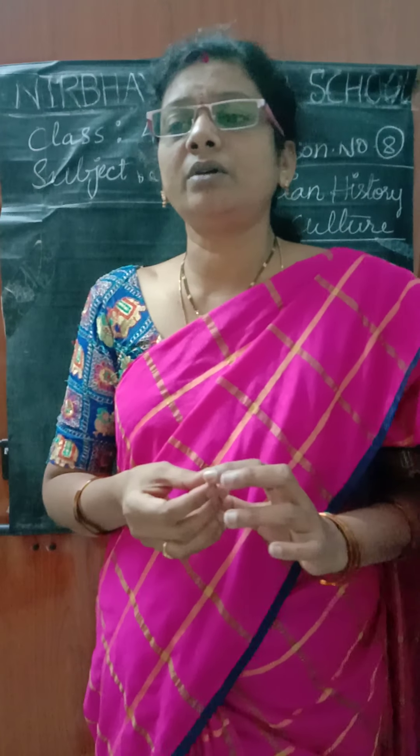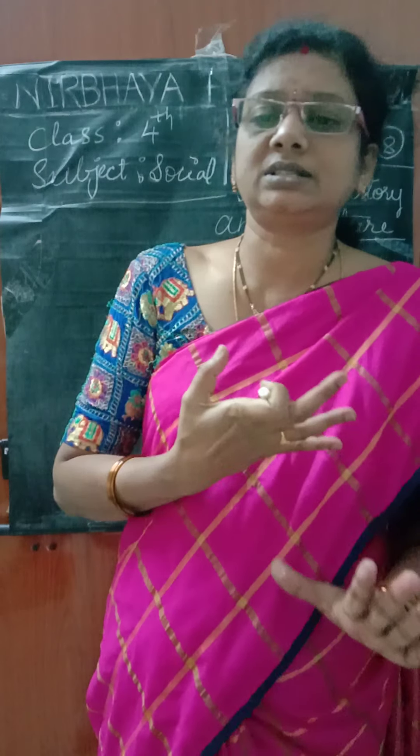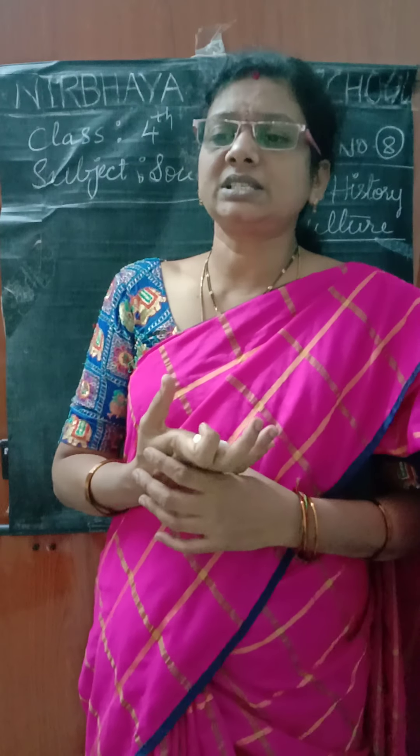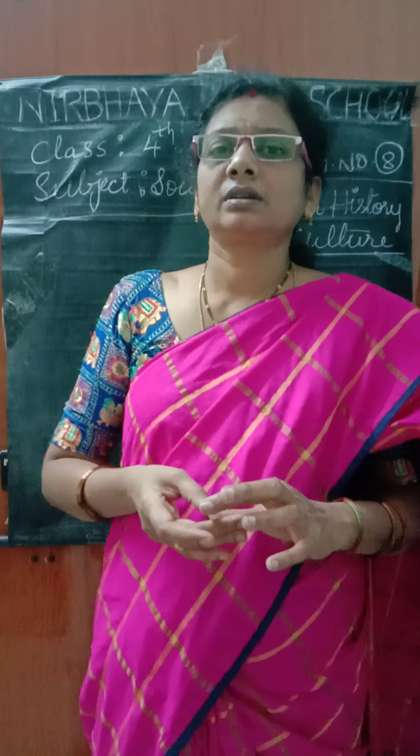Rashi shows Mihir a timeline she drew on the chart paper. Mihir asks Rashi: What is this you have drawn? Rashi explains: It is a timeline showing the periods during which different kings and queens ruled in India. I made it for a class project, showing which king or queen ruled from one year to another.